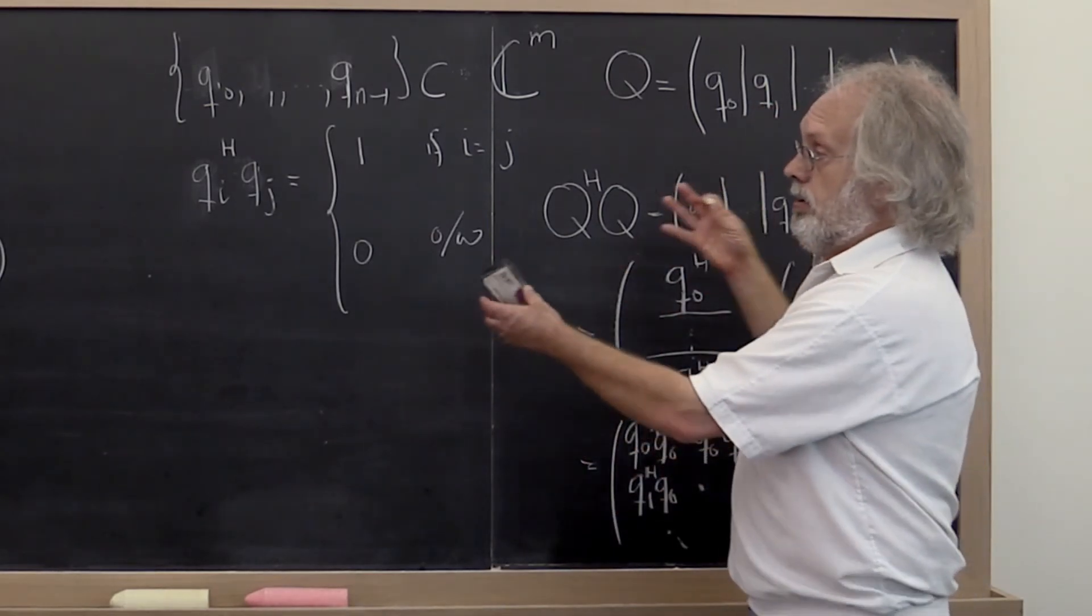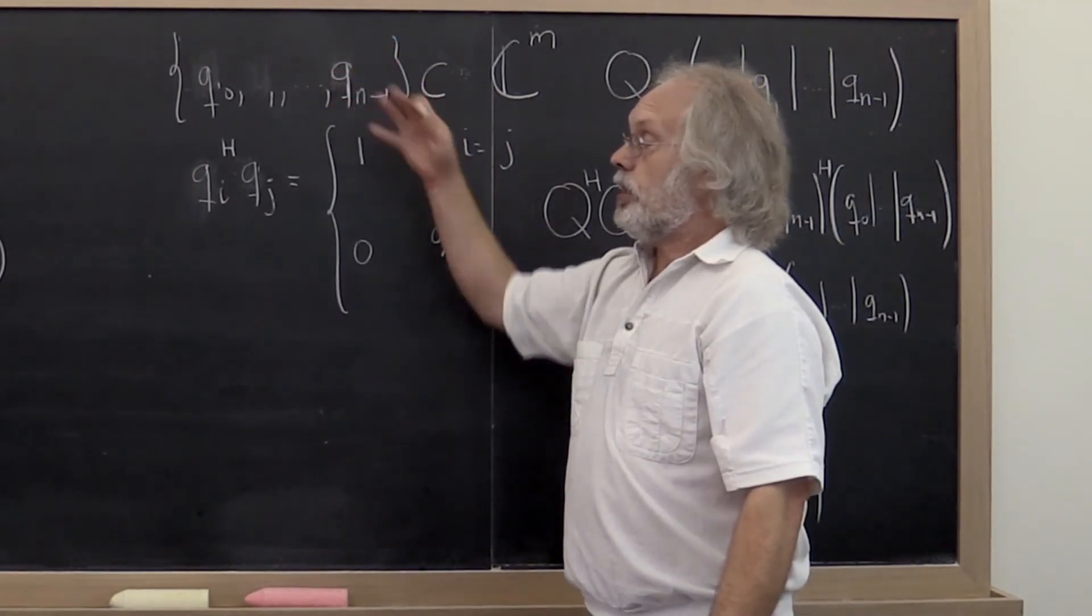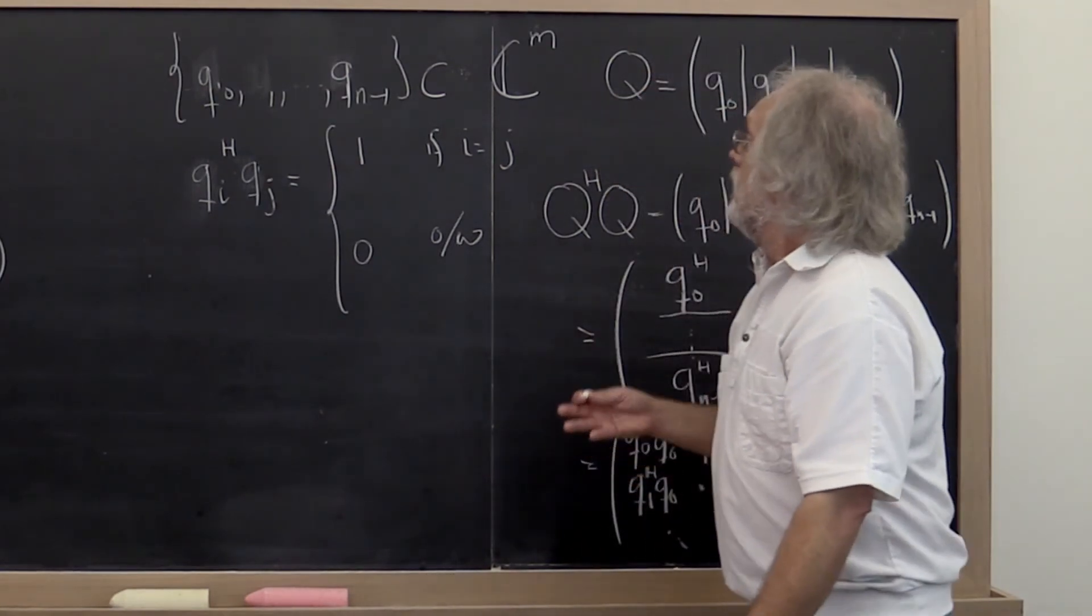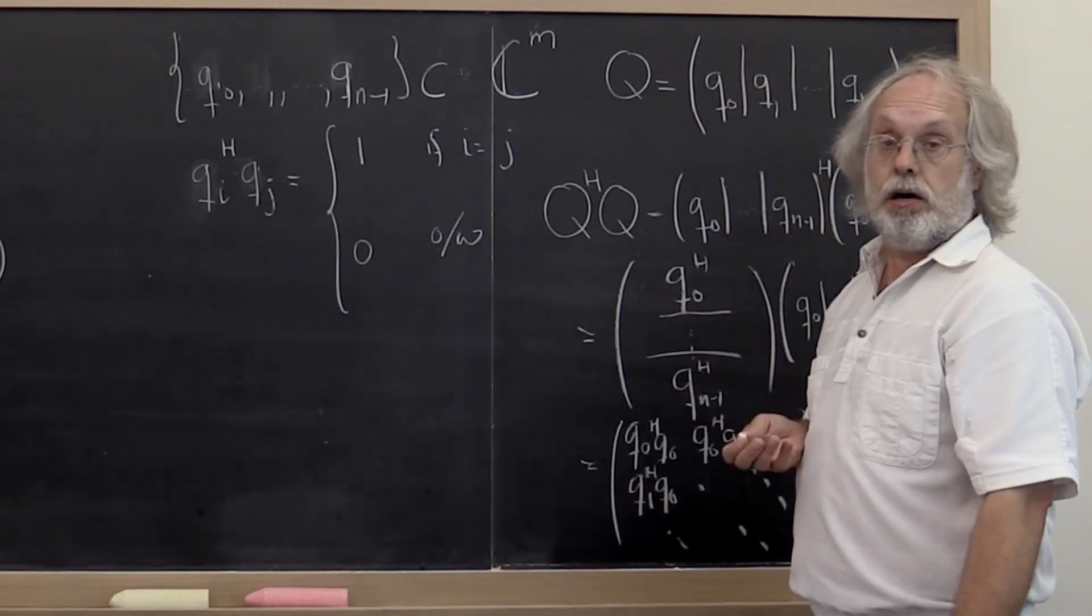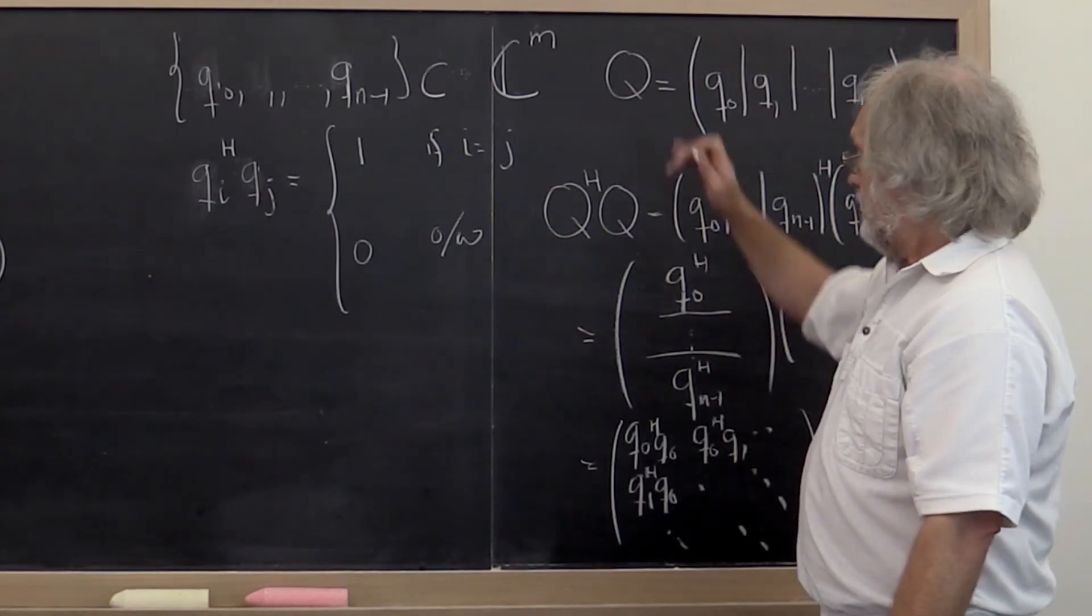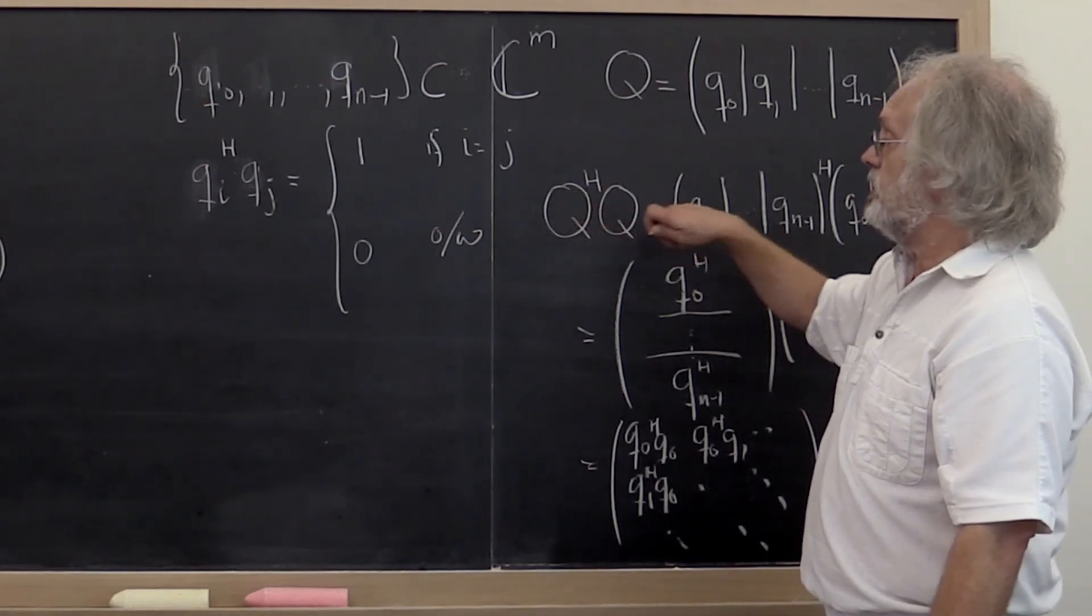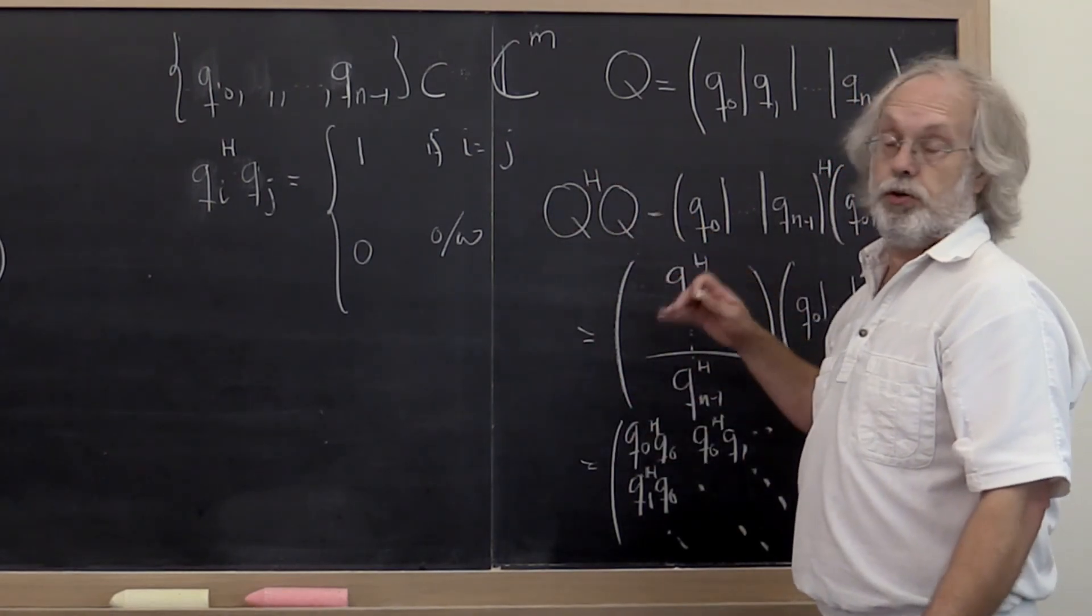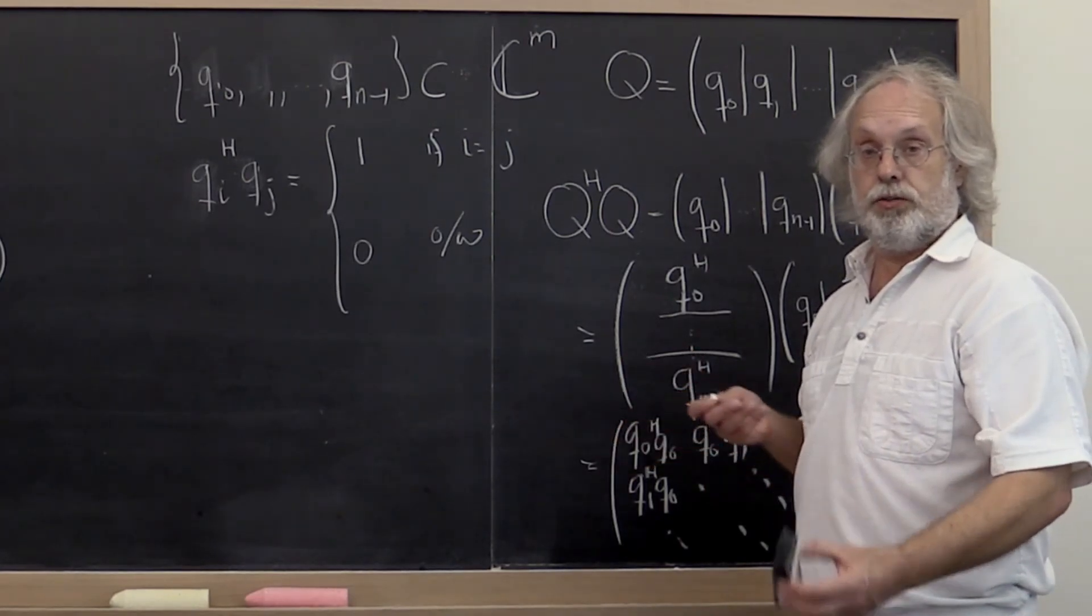So there's clearly a nice relationship between a set of mutually orthonormal vectors and the matrix that has these vectors as its columns. And a matrix that has the property such that Q Hermitian q is equal to the identity, or in the real case Q transpose q equal to the identity, is known as an orthonormal matrix.